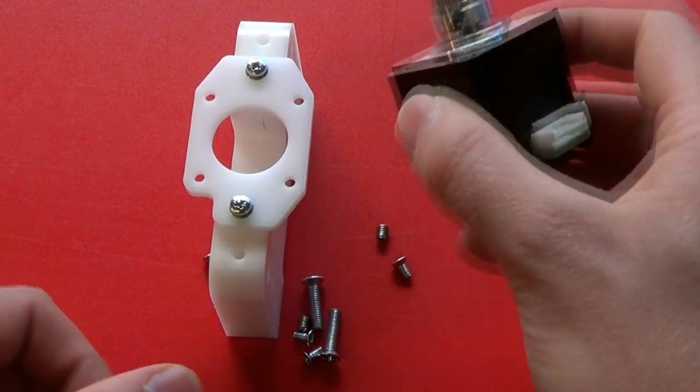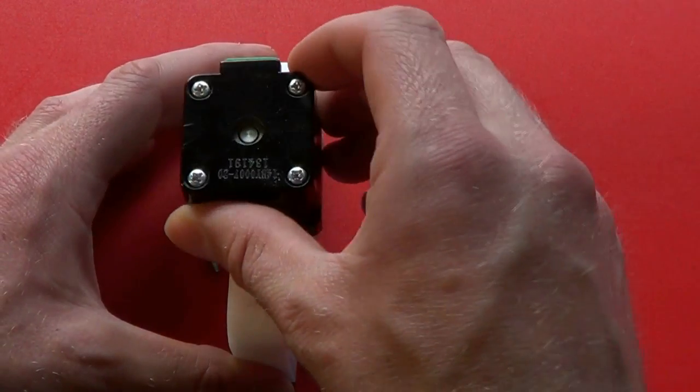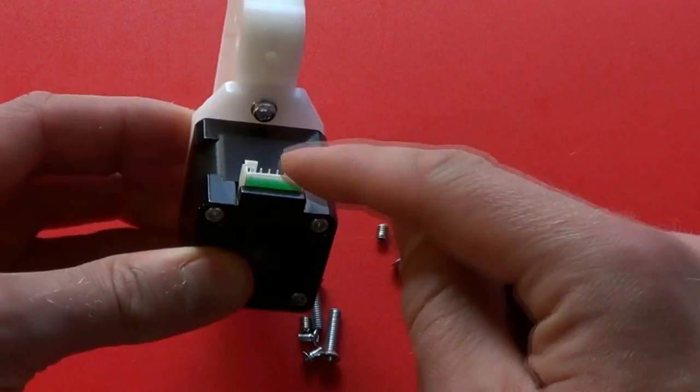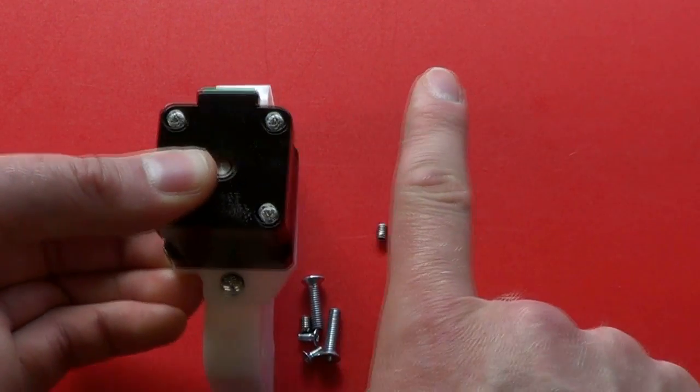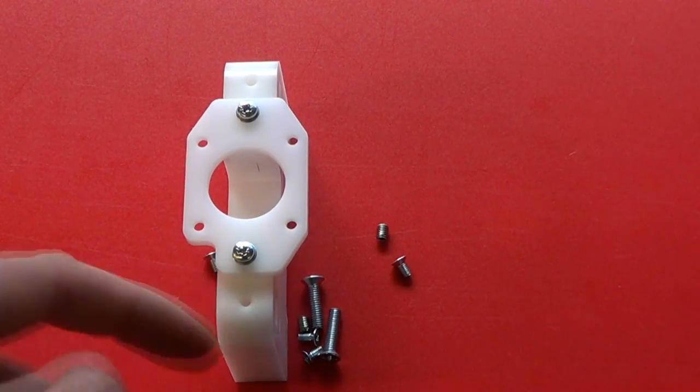Next take the stepper motor and place it on top of the motor mounting plate so that the connector is towards the rear. This cut out in the motor mounting plate here is towards the front.